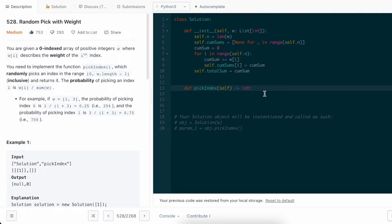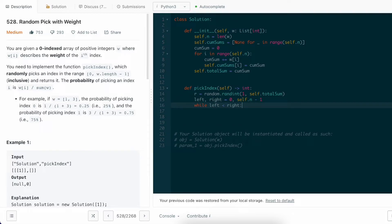Now that we're finished with init, let's move on to our binary search implementation for pick index. We start with r being a random integer between 1 and the total sum inclusive. Here, we use the random library. Then, we initialize left and right pointers to be 0 and n minus 1, being the inclusive range of w. While the left is less than the right, we perform binary search. We declare the middle value, the middle index, as left plus right minus left floor divided by 2 instead of left plus right floor divided by 2 to prevent overflow in case left and right pointers are really large integers.